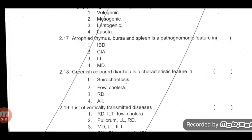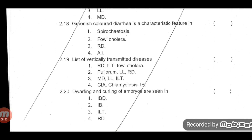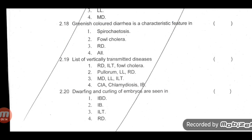Atrophy of thymus, bursa, and spleen is a pathognomonic feature of Marek's disease — fourth option is correct. Marek's disease primarily affects the primary lymphoid organs. Greenish color diarrhea is a characteristic feature of spirochetosis, fowl cholera, and Ranikhet disease — all three are correct. Vertically transmitted diseases include pullorum, lymphoid leucosis, and Ranikhet disease — second option is correct. Dwarfing and curling of embryos are seen in infectious bronchitis — option B is correct. That's all for this paper.